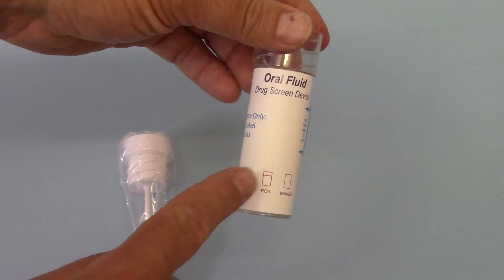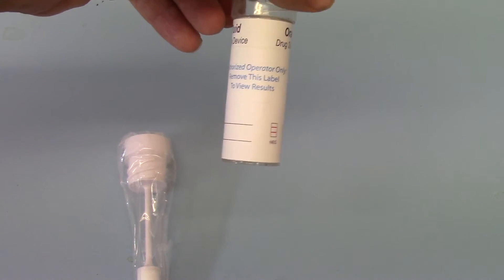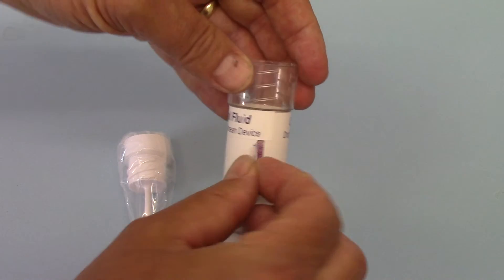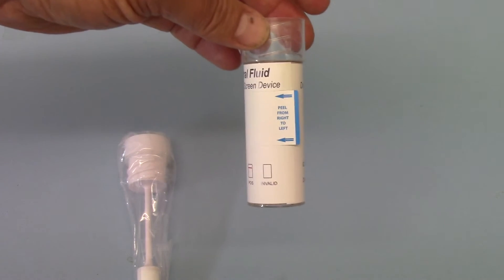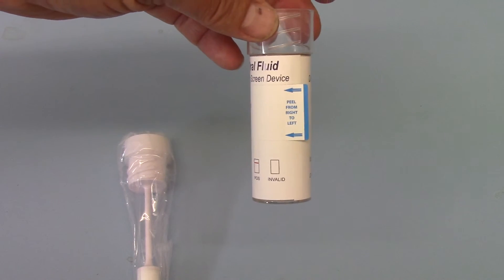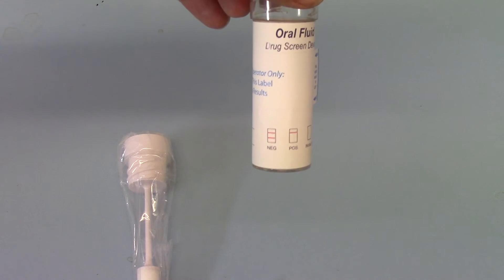And on the side here you've got basic information on how to run the test and interpret a negative and a positive result. The results appear under this label here. Now you can either choose, depending on your procedure, to remove that before running the test, or it can be removed at the specified read time and the results displayed.